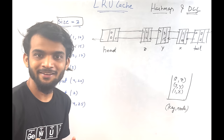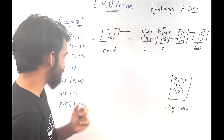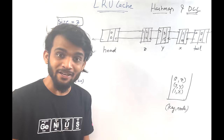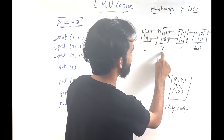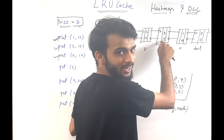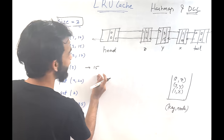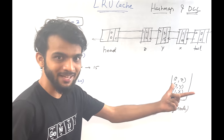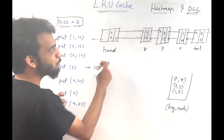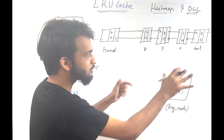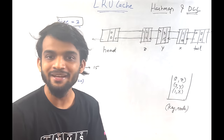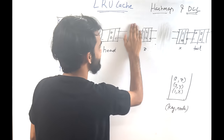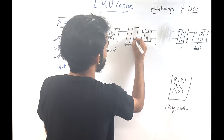For get(3): check if 3 exists in the hash map — yes, at address Y. Its value is 15, so return 15. But since we just used key 3, it becomes the most recently used. So we delete this node from its current position and bring it right after head.